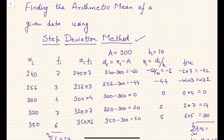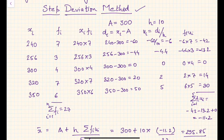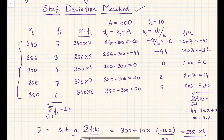We'll explain with an example and then derive the formula for the step deviation method. The problem with the direct method was that if the values of the variable are quite large and the frequency is also quite large, then calculating xi*fi — multiplying all values with respective frequencies — becomes quite cumbersome. In the earlier era there were no computers or calculators, so when statistical methods were formulated, people derived easier methods to simplify the process.